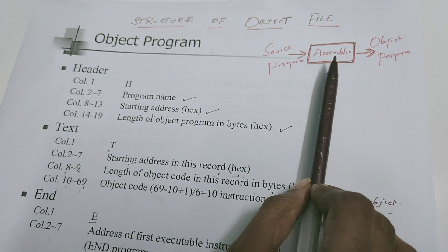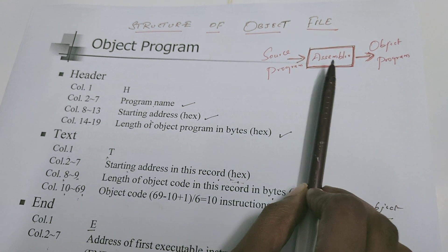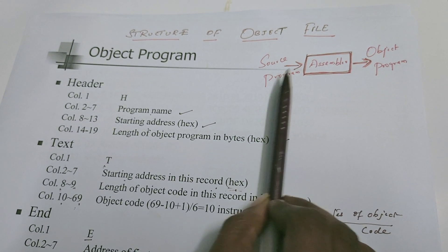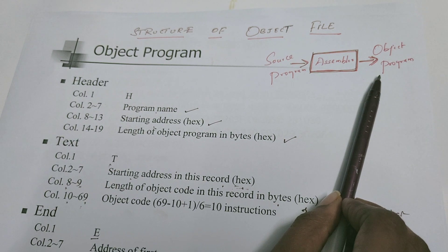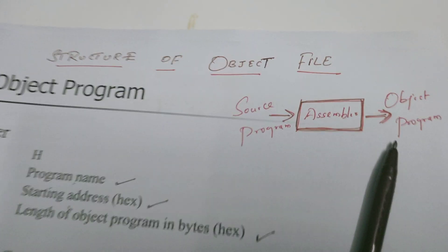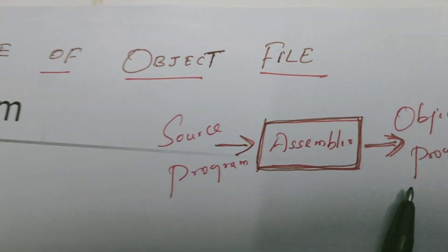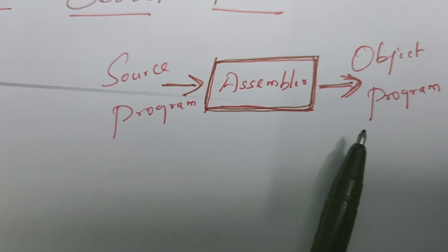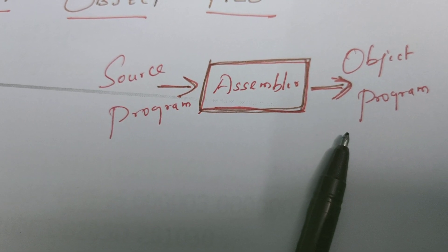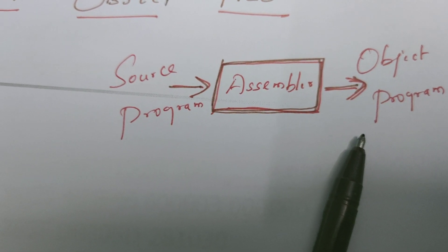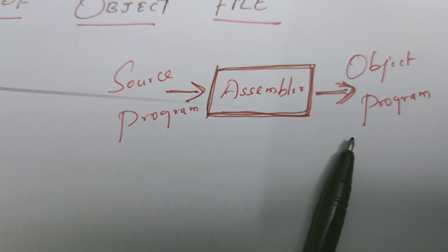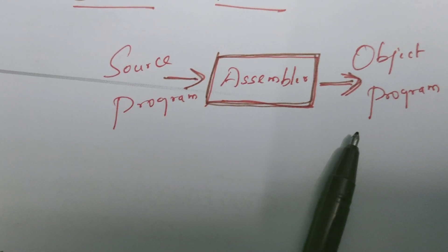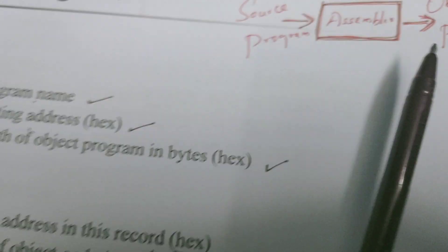Let us recollect once again what is the task of the Assembler. Assembler takes a source program as input and produces the object code in the form of a file as output. So let us understand what is the structure of this object file. Assembler writes this object program in the form of a file — that file is known as the object file.